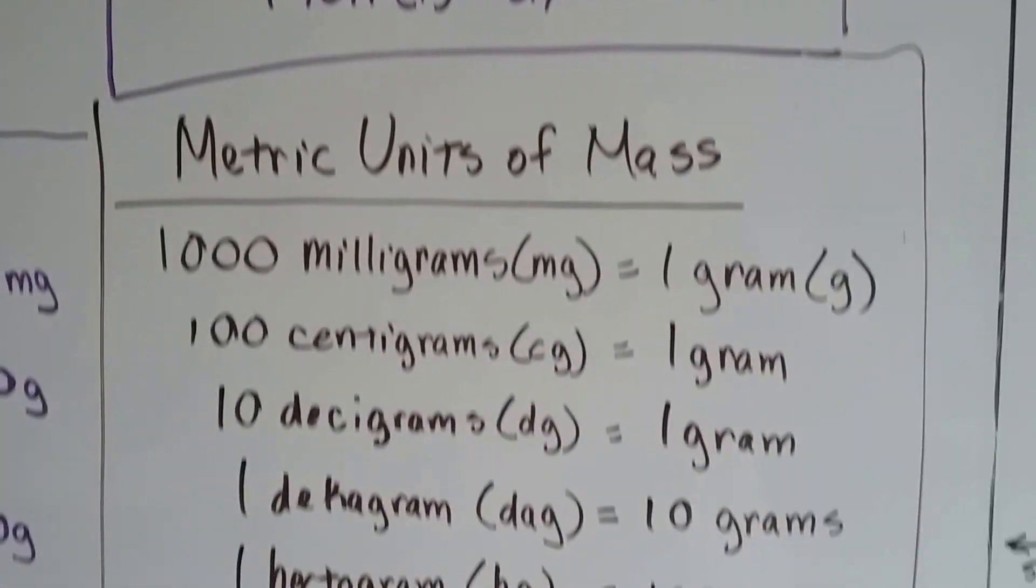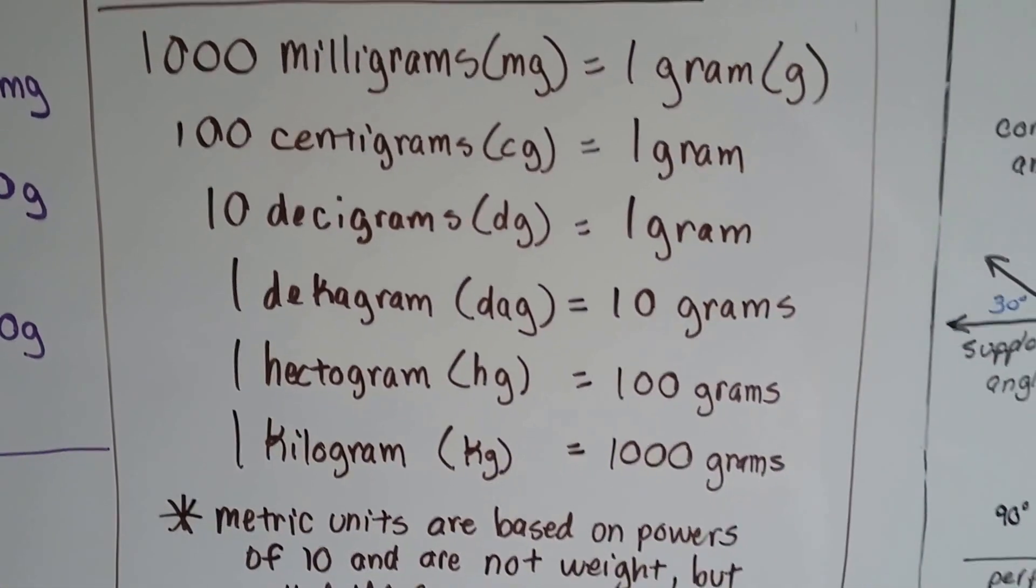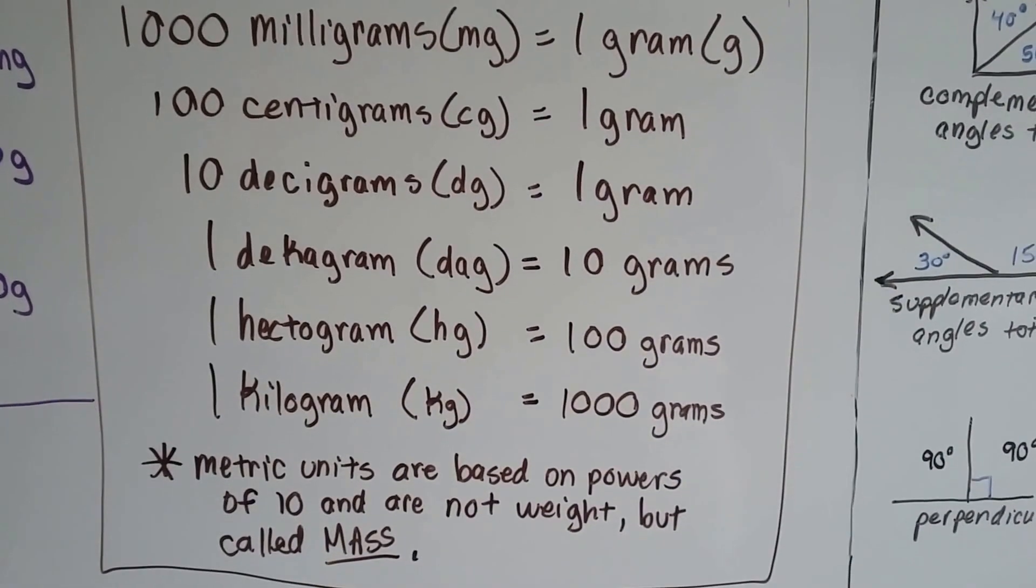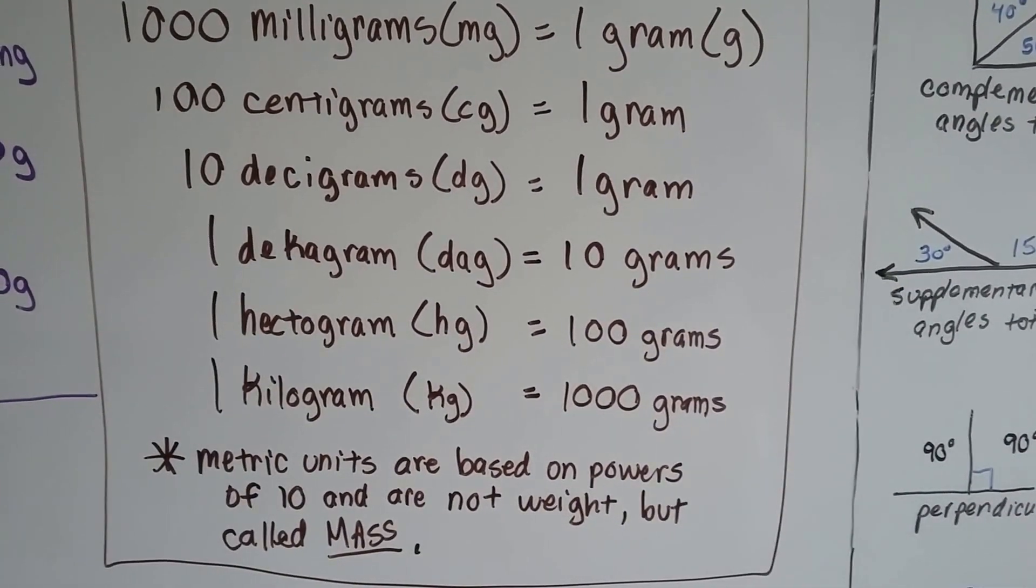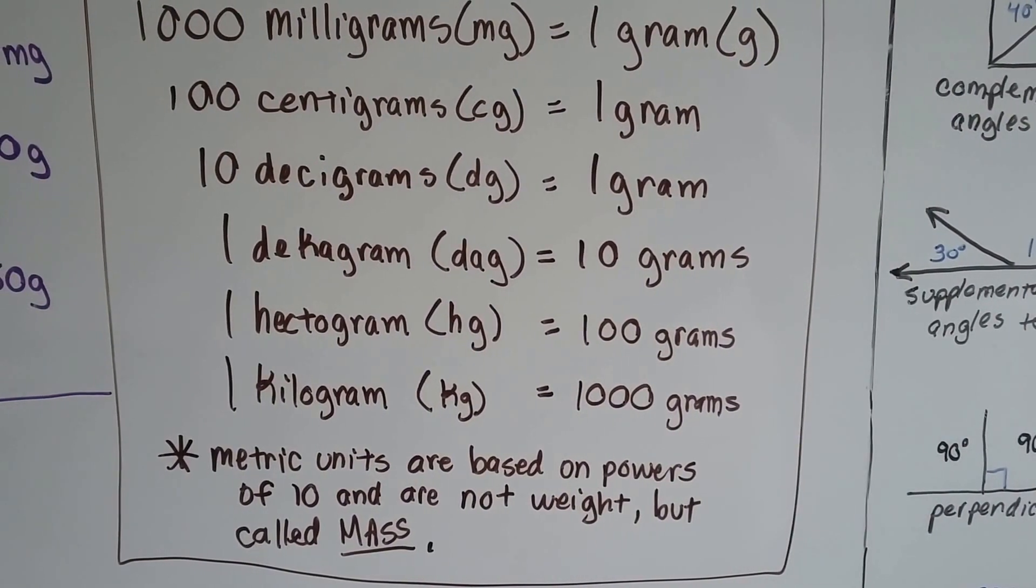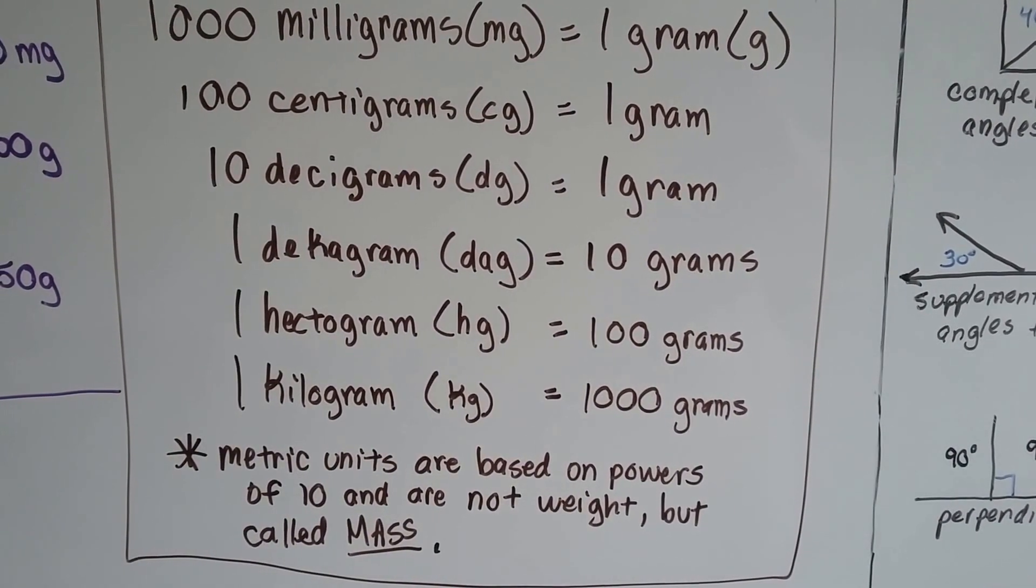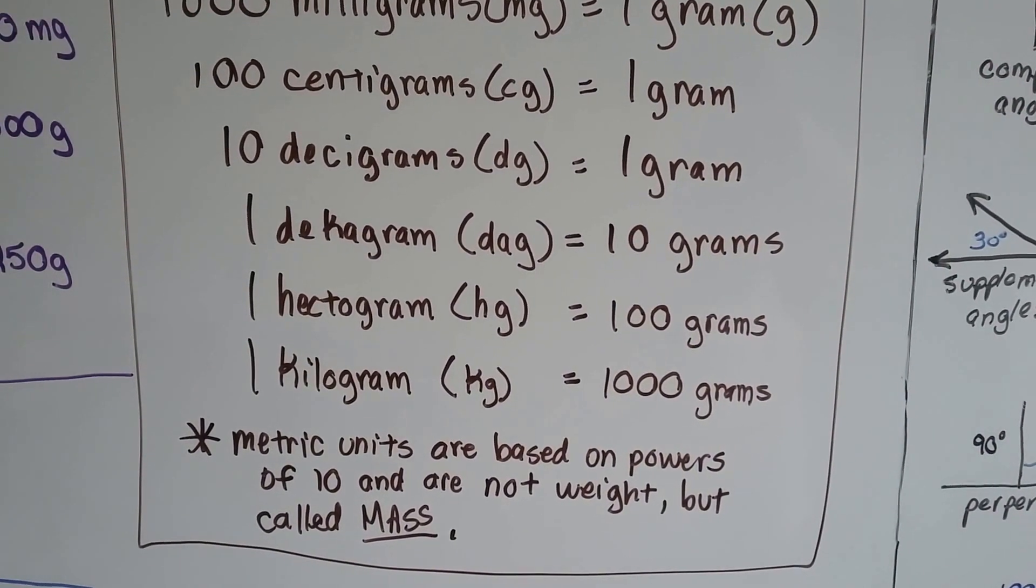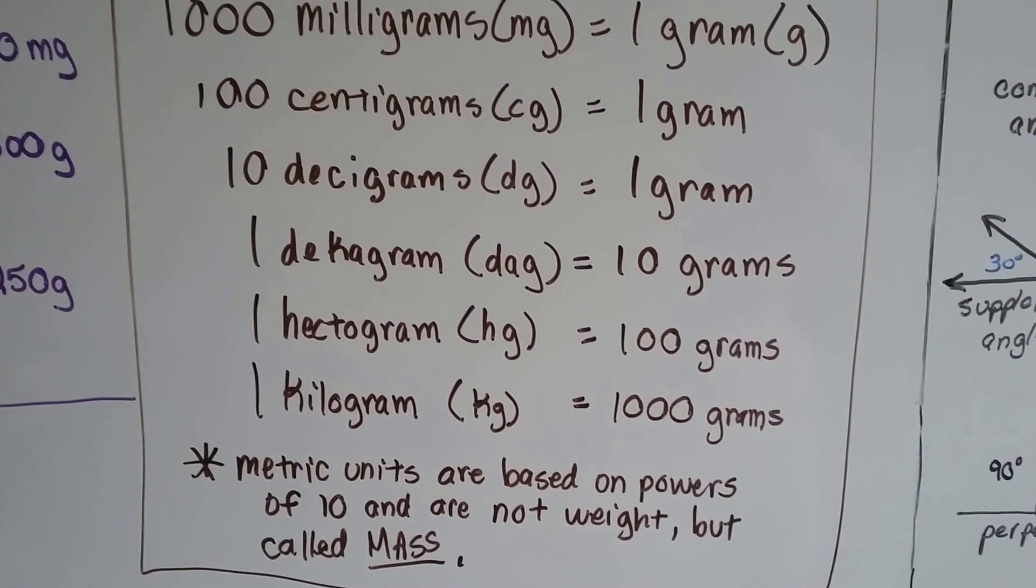But in metric units of mass, 1,000 milligrams is equal to one gram. 100 centigrams is equal to a gram, and 10 decigrams is also equal to a gram. But then when we move to a decagram, it turns into 10 grams. One hectagram is 100 grams, and one kilogram is 1,000.